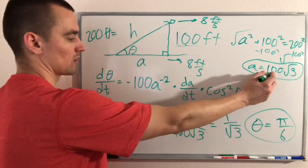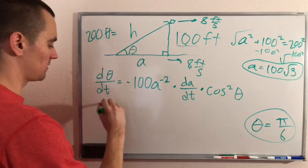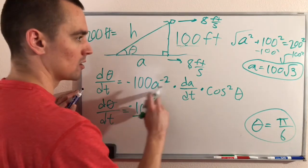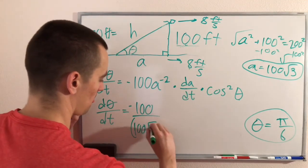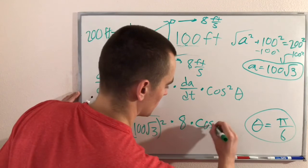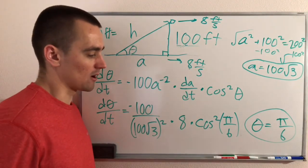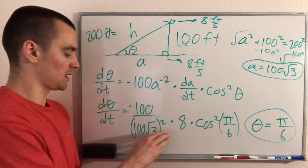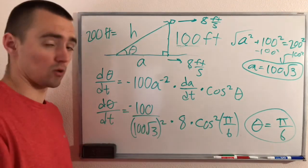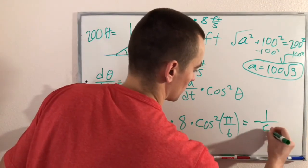So we have θ = π/6, a = 100√3, and da/dt = 8. Plugging into our formula: dθ/dt = −100/(100√3)² · 8 · cos²(π/6). Simplifying — using the unit circle for cos(π/6), squaring it, multiplying by 8, squaring the denominator, and simplifying the fraction — gives us dθ/dt = −1/50.